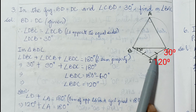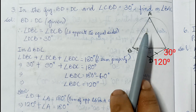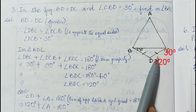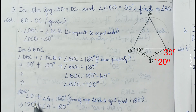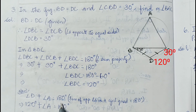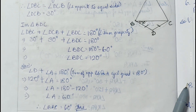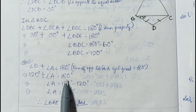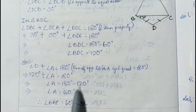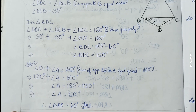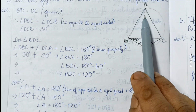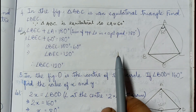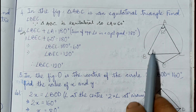Since ABCD is a cyclic quadrilateral, the sum of opposite angles is 180 degrees. So angle D plus angle A equals 180. We have 120 plus angle A equals 180, therefore angle A equals 60 degrees. Therefore angle BAC equals 60 degrees.